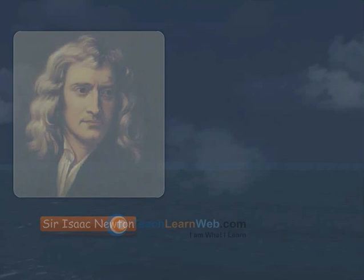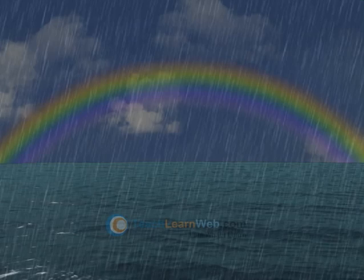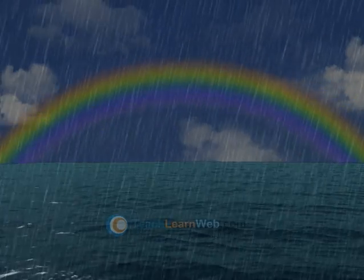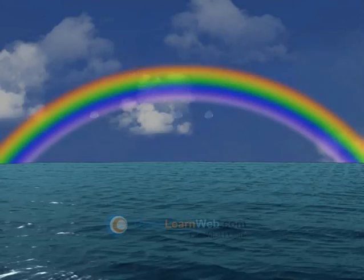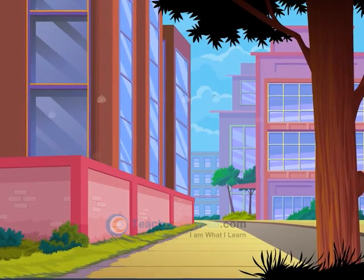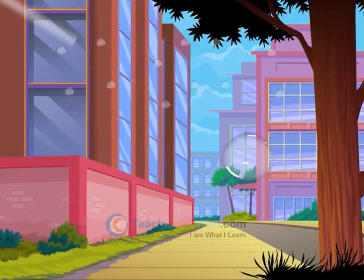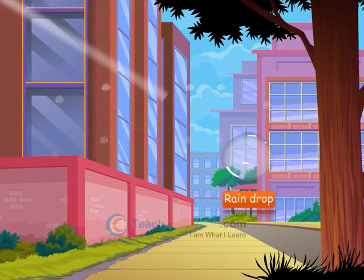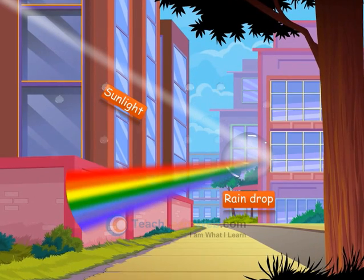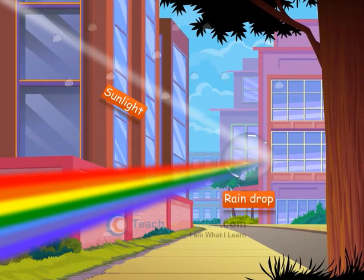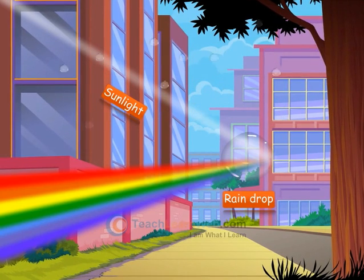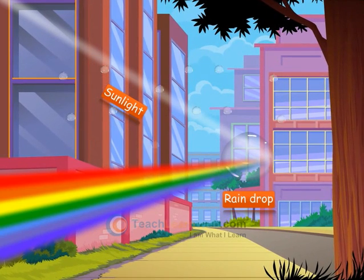A rainbow is a natural spectrum which appears in the sky after a rain shower. It is caused by the dispersion of sunlight by tiny water droplets present in the atmosphere. Raindrops act like glass prisms which refract and disperse the incident sunlight, then reflect it internally, and finally refract it again when it comes out of the raindrop.